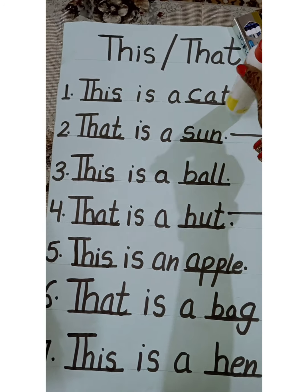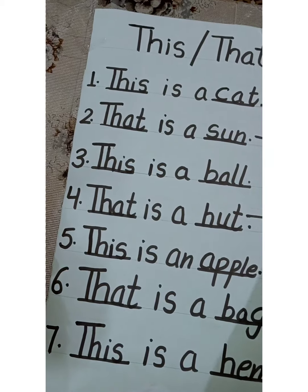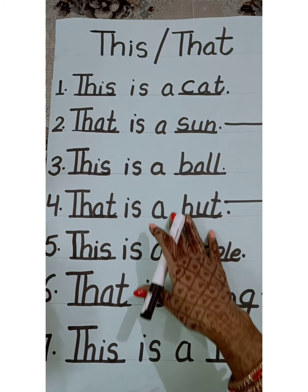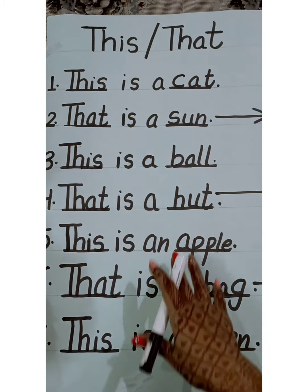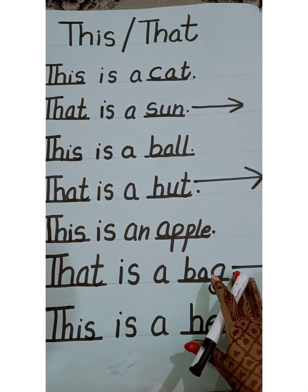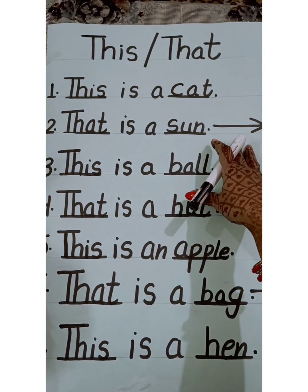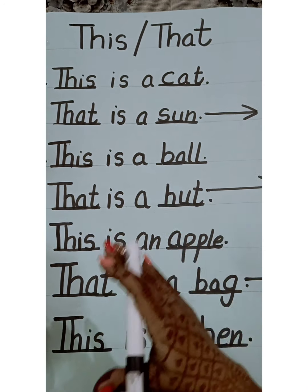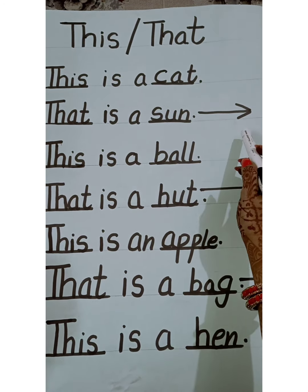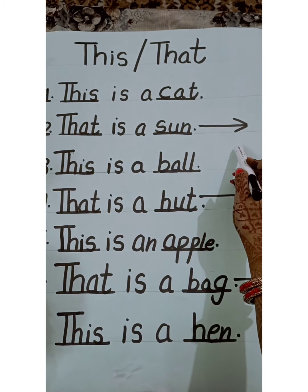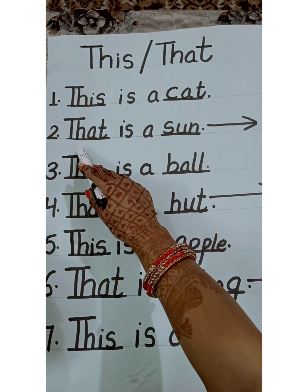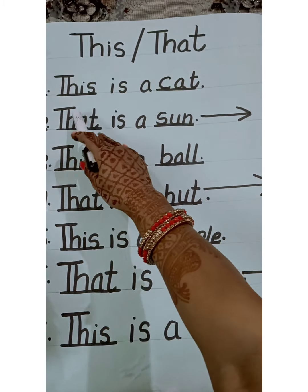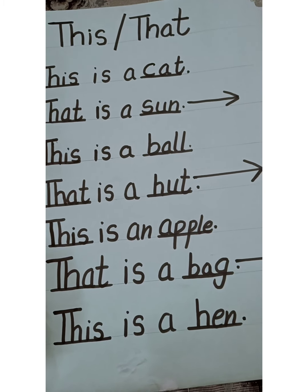Now I will tell you with the help of a few pictures. Here I have written a few sentences. Somewhere I have put arrows. Those arrows are showing that the thing is far from us. So the things that are far from us, we will use 'that' for them. The things that are near to us, we will use 'this' for them.